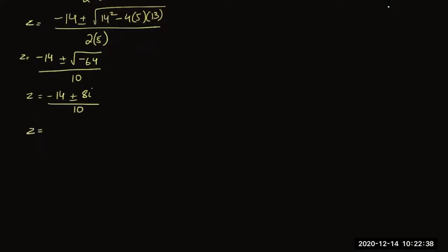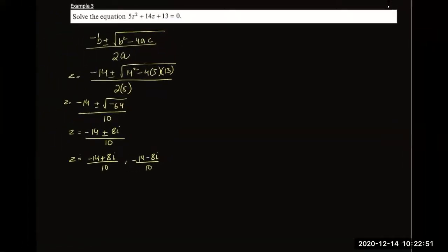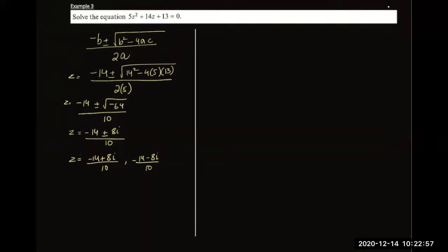So there are two values from this calculation. Complex numbers are often represented with the letter Z.